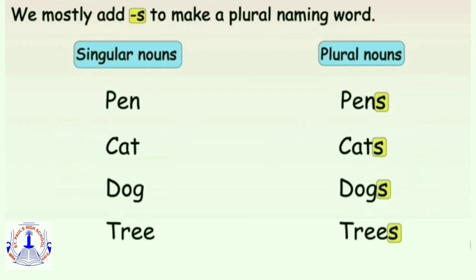Let's add S and see how singular words turn into plural words. P-E-N, pen — one pen. P-E-N-S, pens — many pens. C-A-T, cat — one cat. C-A-T-S, cats — many cats. D-O-G, dog — one dog. D-O-G-S, dogs — many dogs. T-R-E-E, tree — one tree. T-R-E-E-S, trees — many trees.